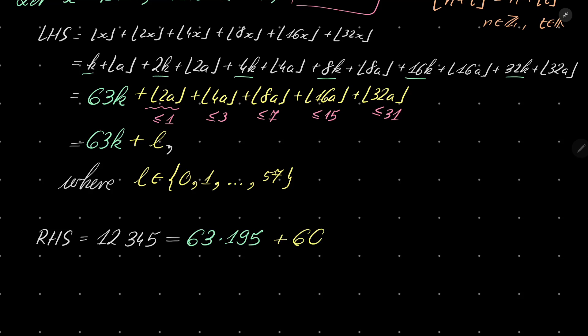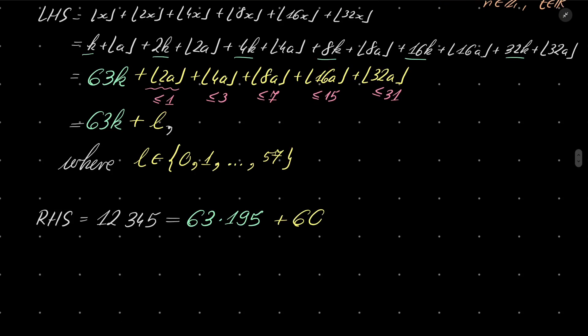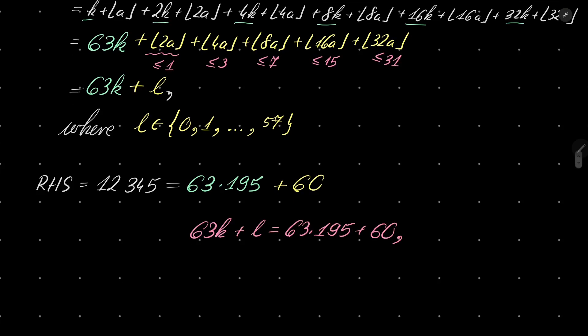Let me check that: 63 times 195 plus 60, yes, it is. And now it should be the case that 63k plus l equals 63 times 195 plus 60, or putting it other way, 63k minus 195 equals 60 minus l.